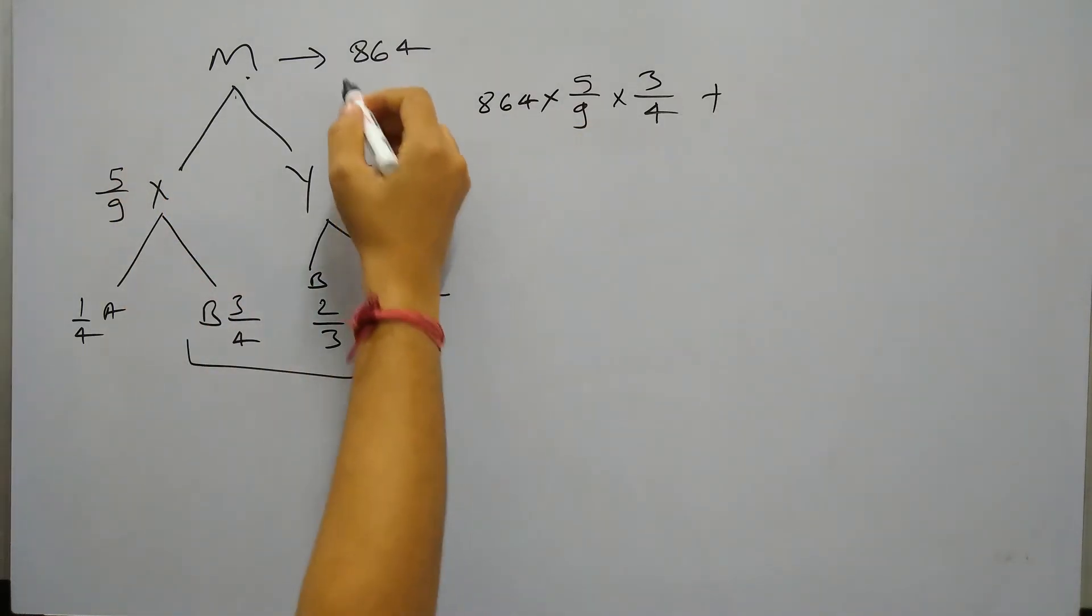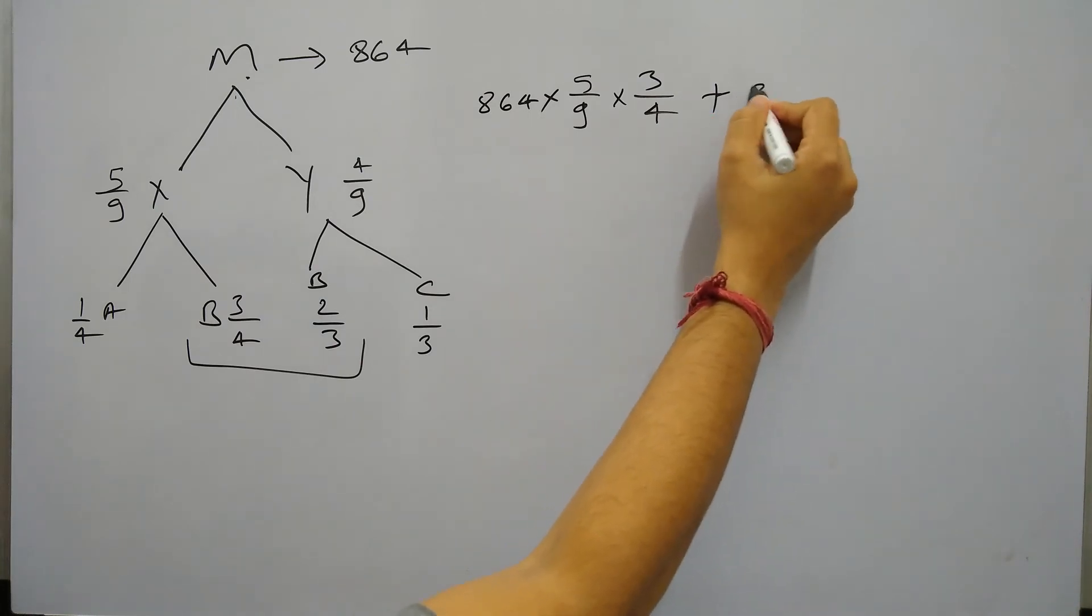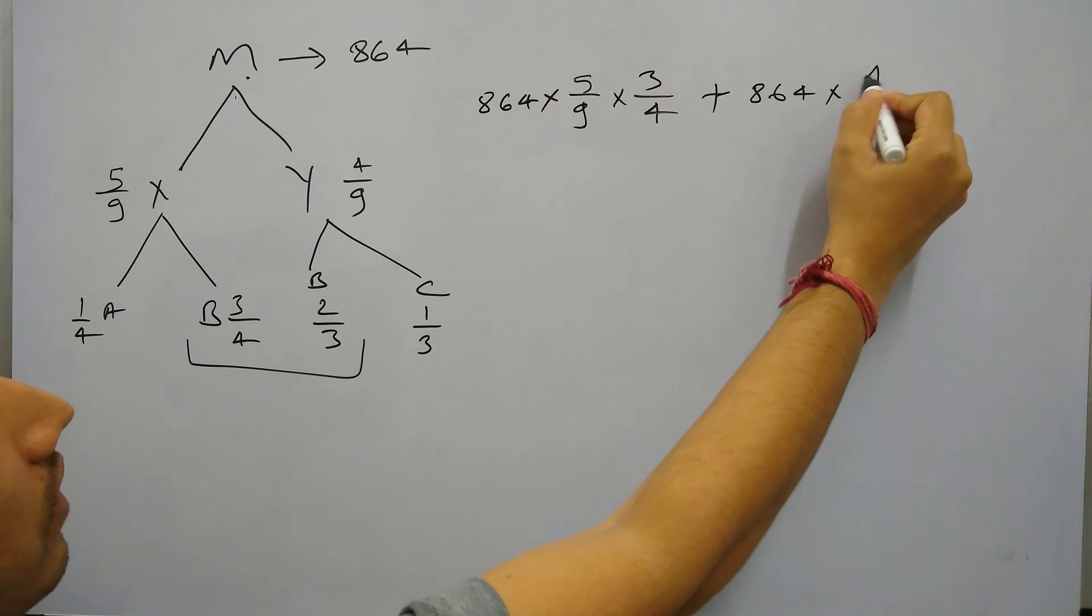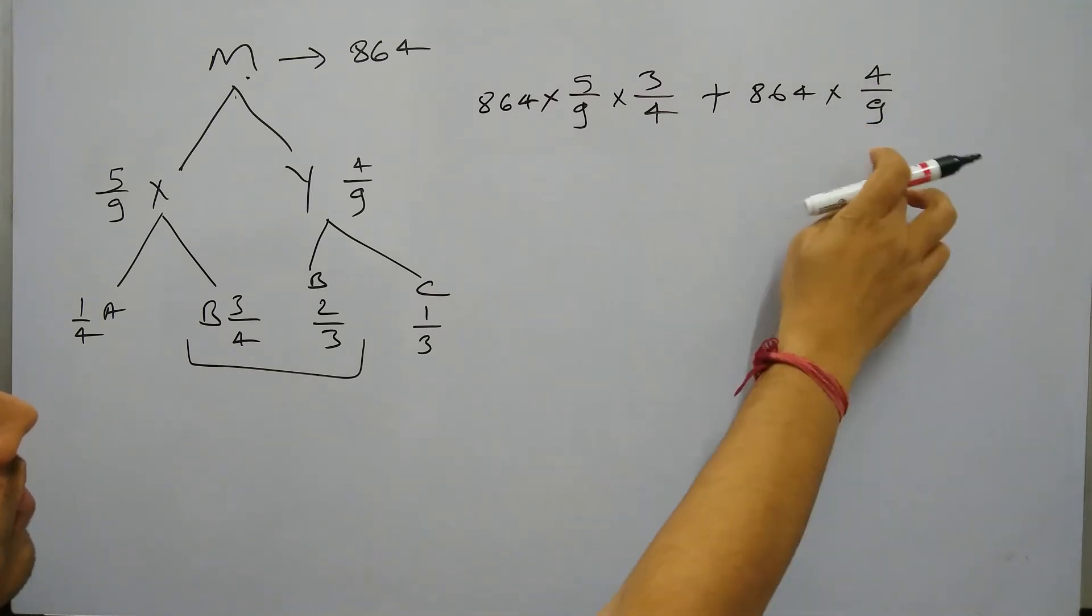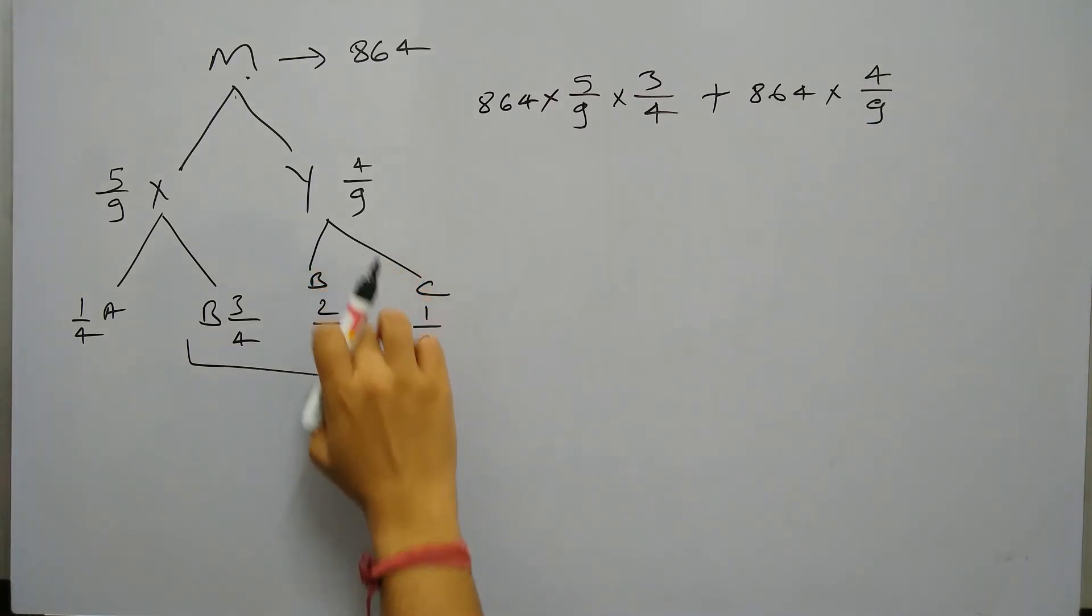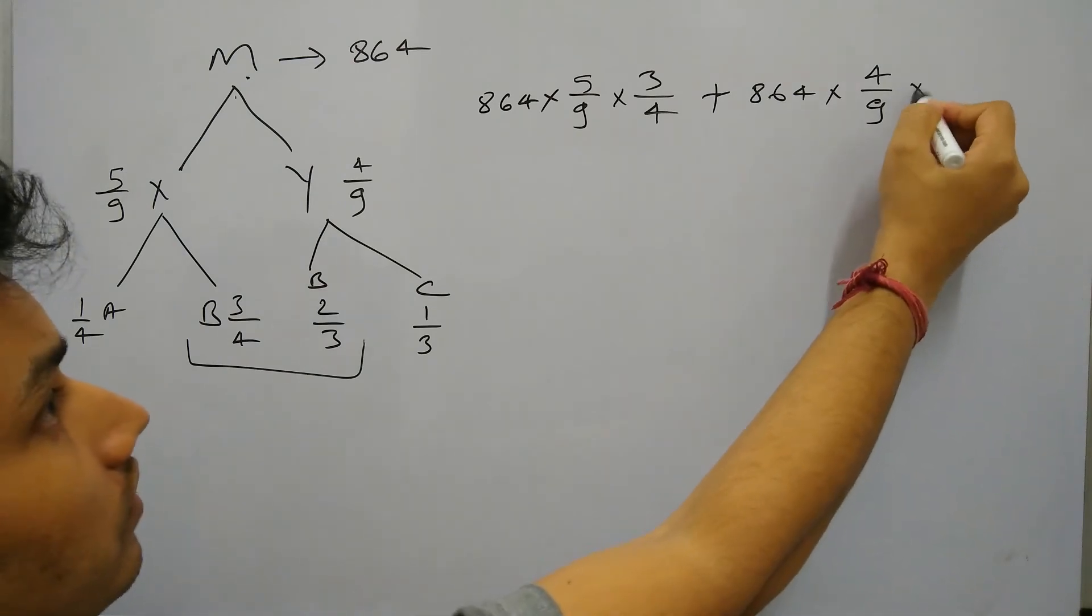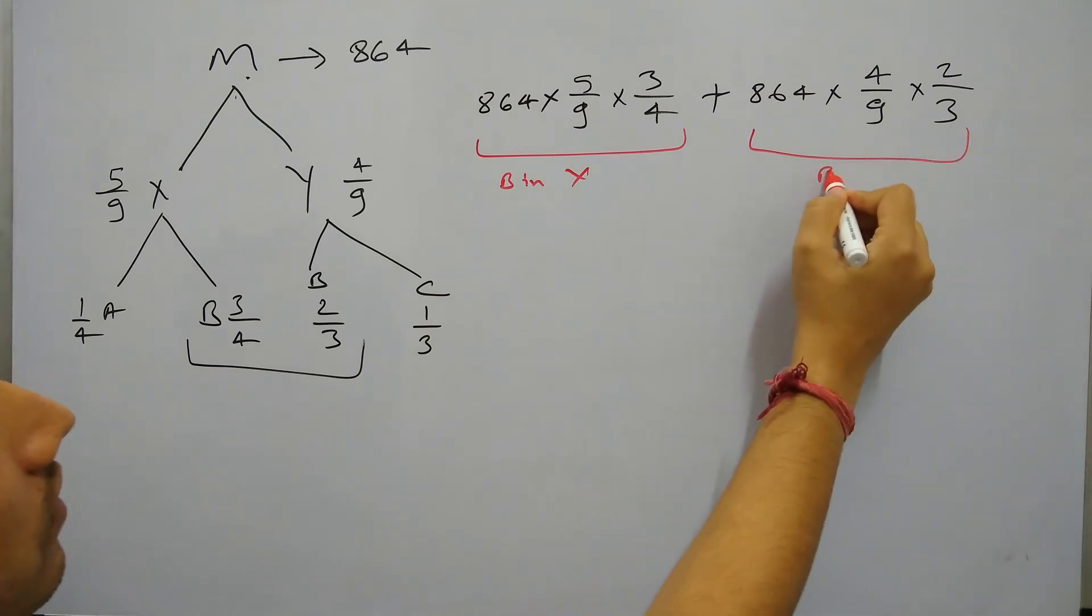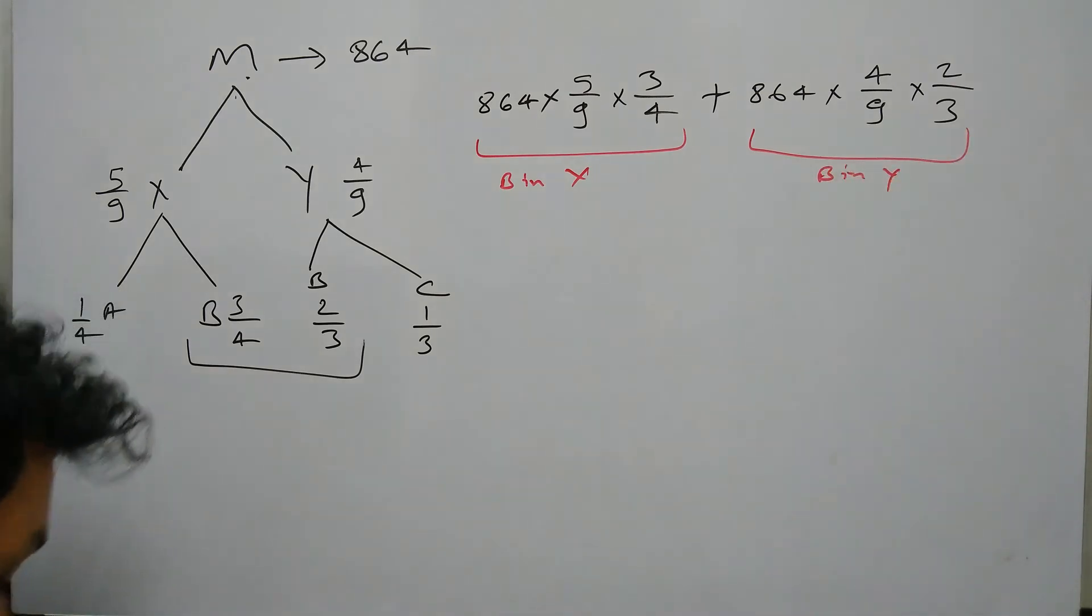And absolute value of B in Y component will be again Y is 4/9 of this. So we can write 864 into Y is 4/9. So this is Y and in Y, 2/3 is B. We can further multiply this by 2/3.